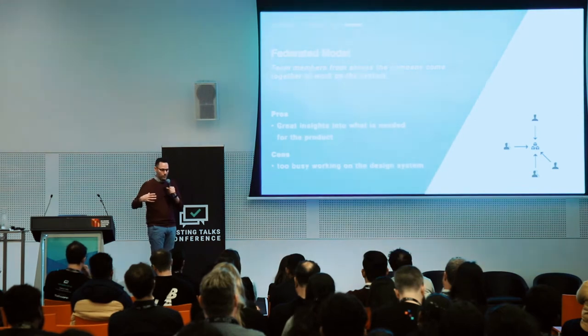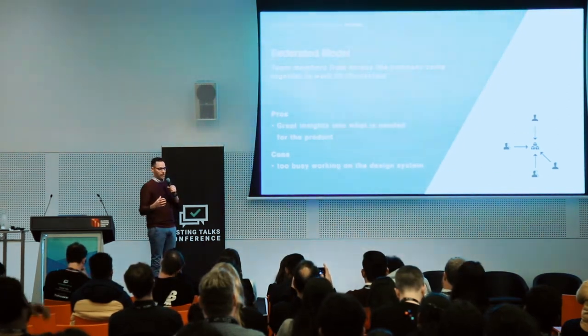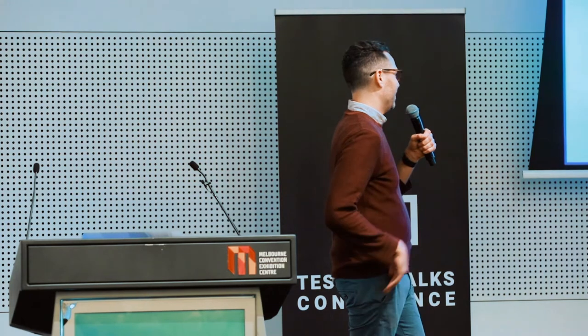The federated model is when you bring people from all around the organisation to be part of the design system team. This can be great because they're on the ground — they understand what QA need, what developers need. They have great insights and they're closer to the customers. But they're usually too busy in their product teams, so the system can break down. I think the centralised model is best, as long as there are feedback loops between product teams, customers, and the design system.